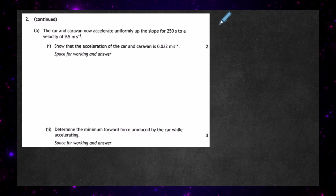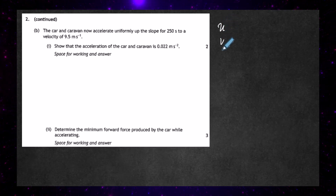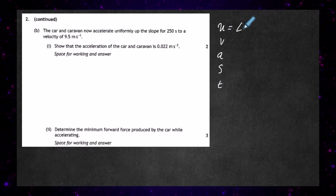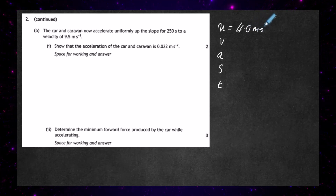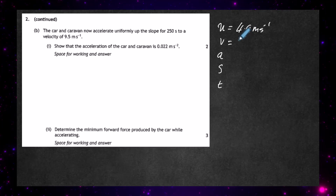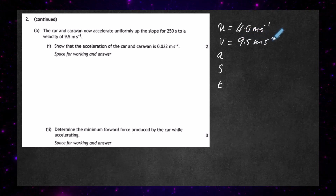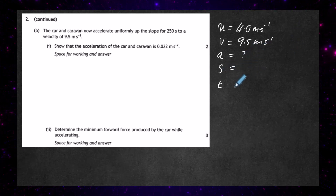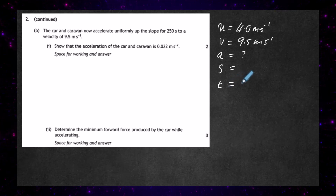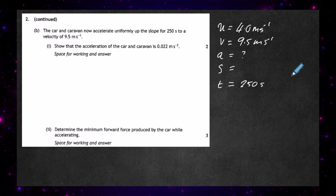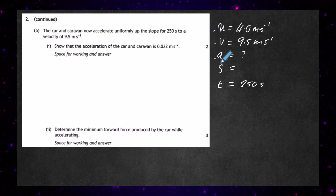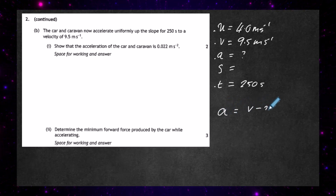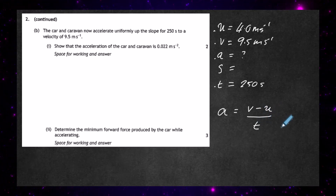This is a kinematics problem. We list our usual kinematics variables: U, V, A, S, and T. The initial velocity U is 4.0 metres per second from the previous part, the final velocity V is 9.5 metres per second, and we need to find acceleration A. We don't know the distance S, but the time T is 250 seconds. With U, V, and T known, we use the equation: acceleration equals V minus U over T.